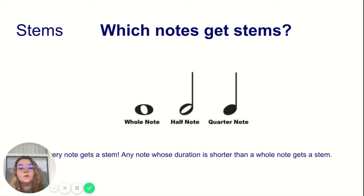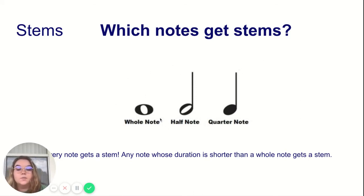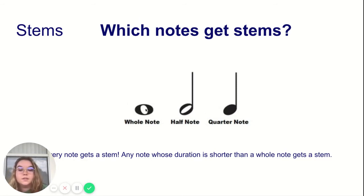As you can see in this picture, not every note gets a stem, but every note with a duration smaller than a whole note does. So the whole note does not get a stem, but the half note and quarter note do get a stem.